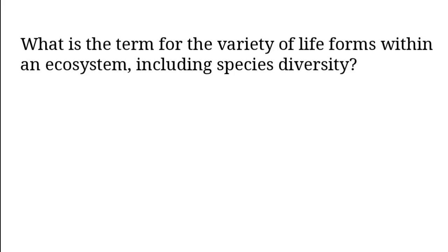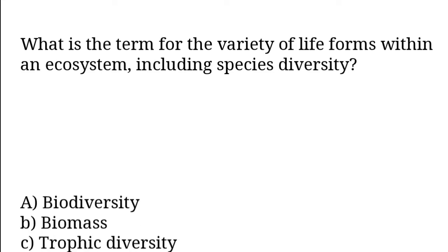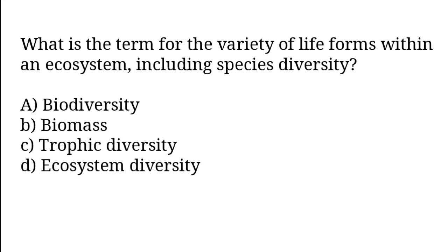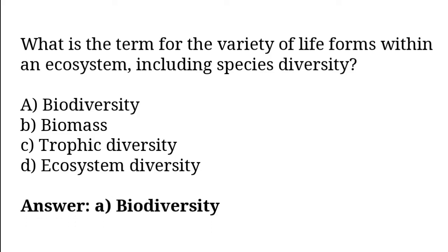What is the term for the variety of life forms within an ecosystem, including species diversity? Options: Biodiversity, biomass, trophic diversity, ecosystem diversity. So the correct answer is option A. Biodiversity.